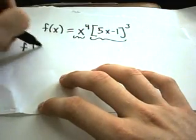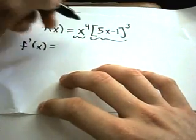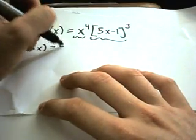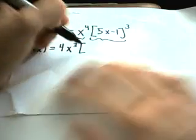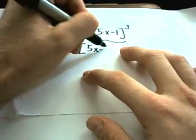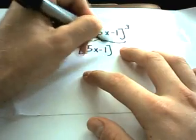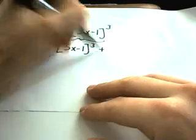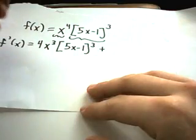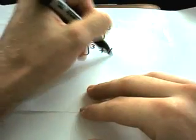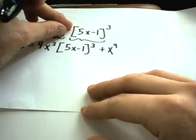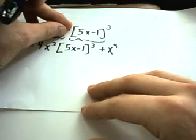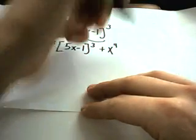So the derivative of this — if I take the derivative of x to the fourth, I'll get 4x to the third. You leave the other piece alone. And then I will leave the x to the fourth alone and take the derivative of the other piece, remembering I have to use the chain rule.